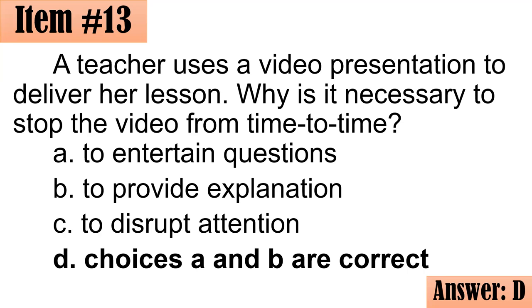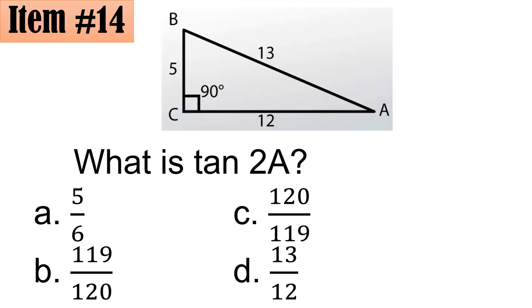Number 14. Take a look at this triangle. What is tangent 2A? Is it 5, 6, 119 over 120, 120 over 119, or 13 over 12? Letter C daw, may sumagot ng B, may sumagot ng A.